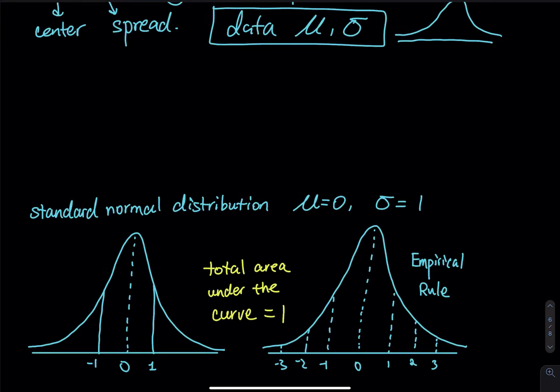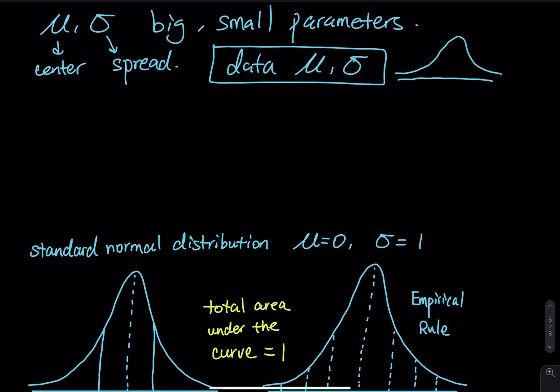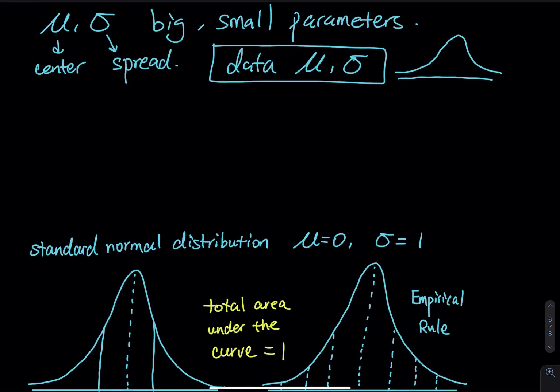So we are no longer dealing with many different bell curves. Each curve have a different center and a different spread. So now we can fix all those into one curve and the shape is fixed. Again, we have different mu. Every time you collect data, you have a different mu and sigma and then you have a different bell curve.